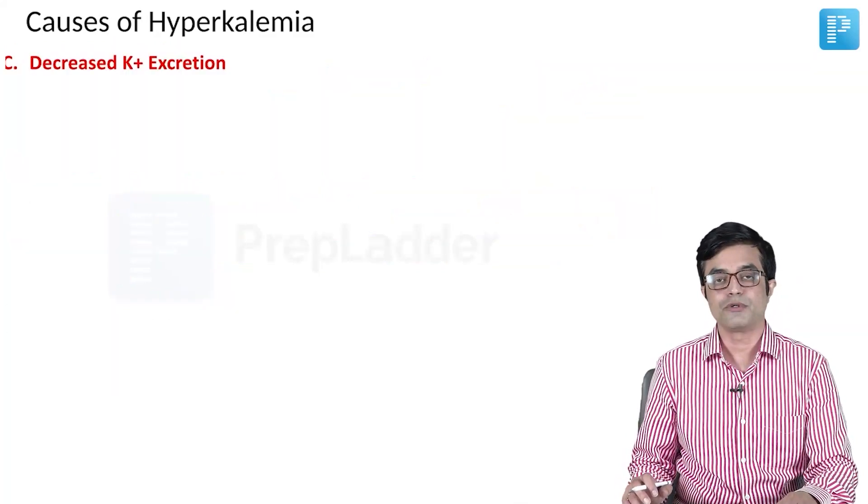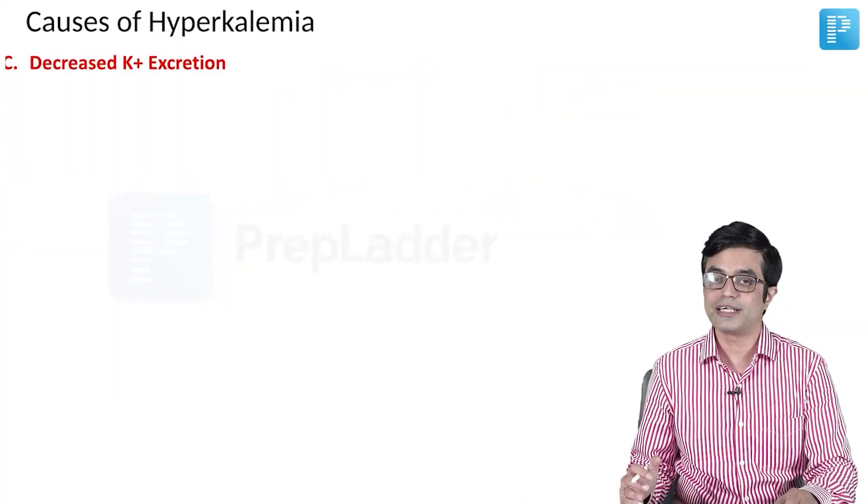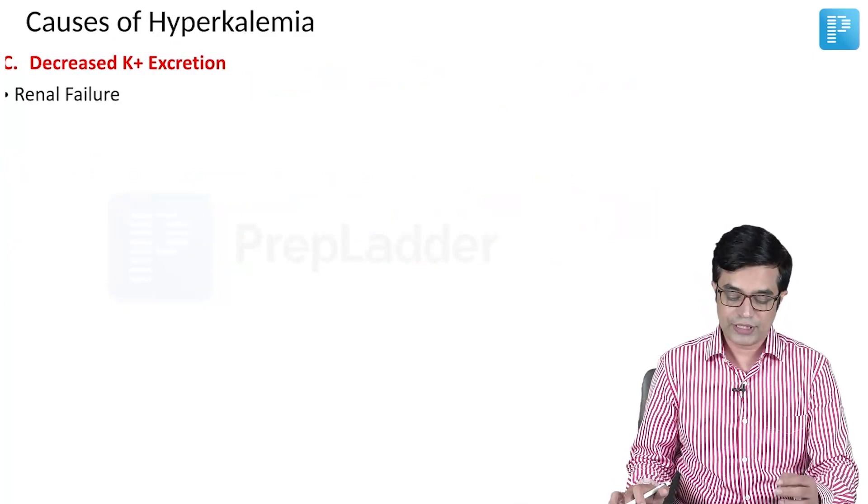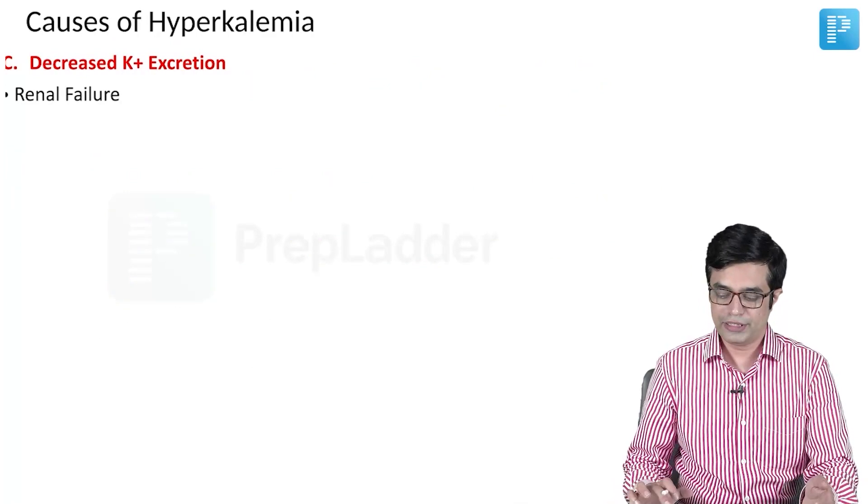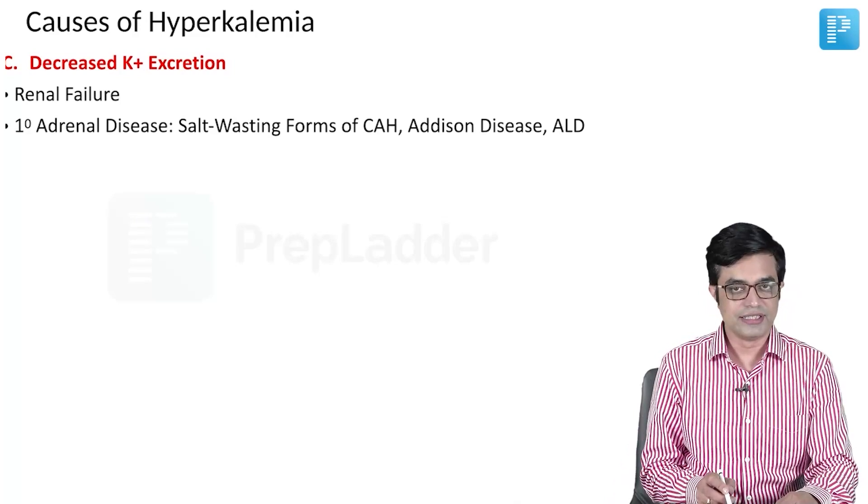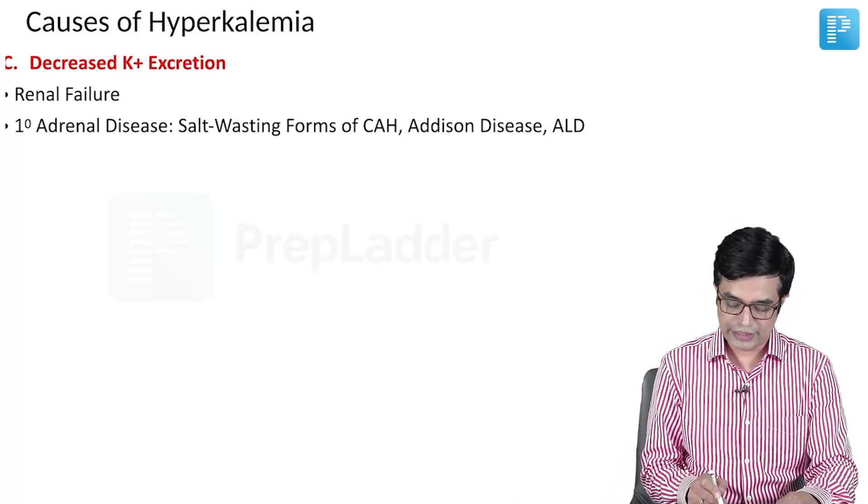The third category is decreased potassium excretion. Potassium is not getting excreted out of the body. Firstly, obviously, it will be seen in all correct varieties of renal failure.